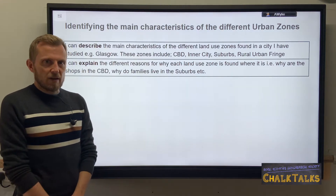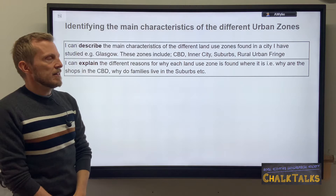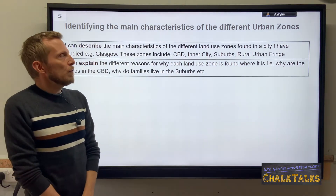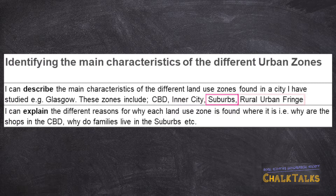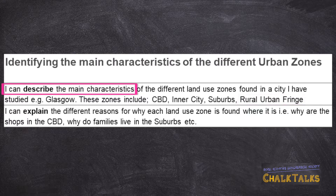In this first pair of learning outcomes you're being asked to identify the main characteristics of urban zones. There are four urban zones you will have studied: the CBD, also known as the central business district, the inner city, the suburbs, and the rural urban fringe. What's important is that you can describe their main characteristics — how they look, how they appear, and what you're likely to find in any one of these four zones.